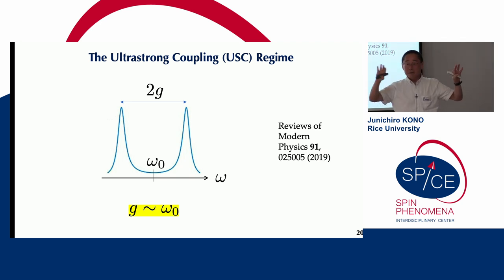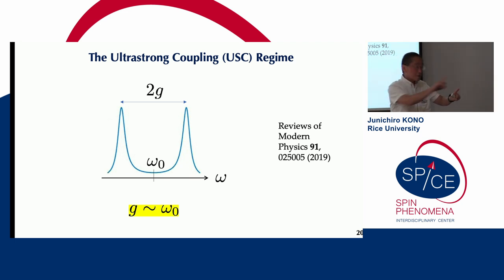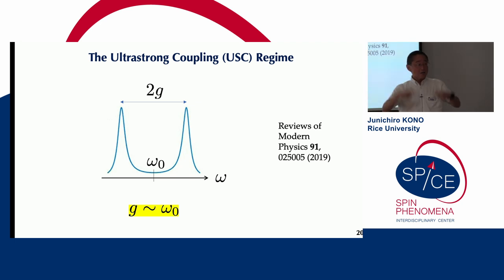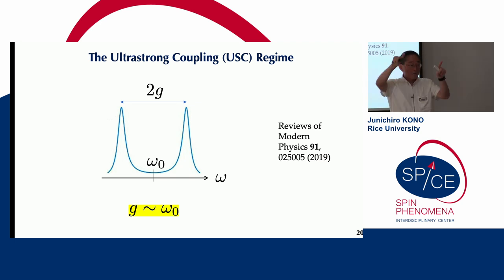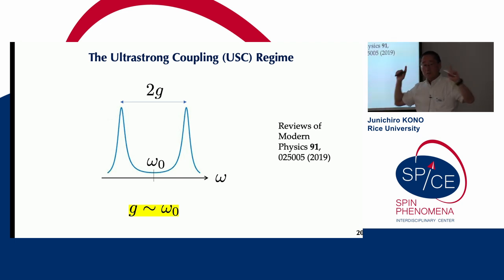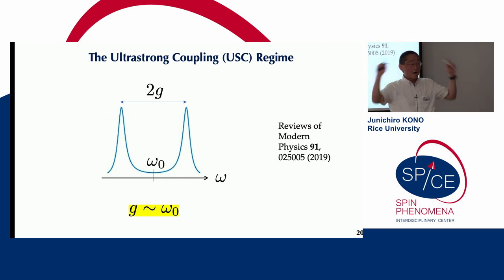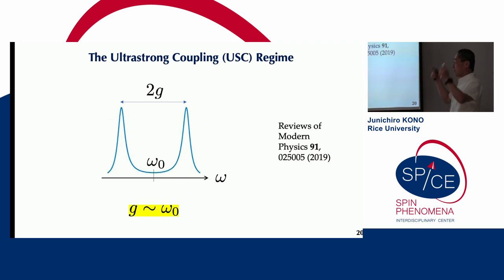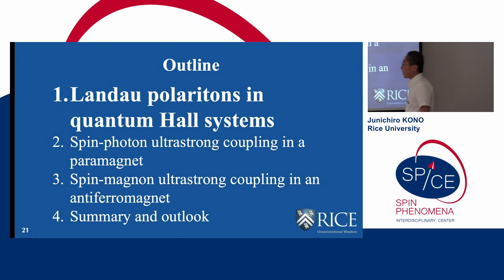If G is larger than omega-zero, energy is exchanged even before one optical cycle of the original oscillator. This means that light and matter are not well defined in this regime — they are completely hybridized.